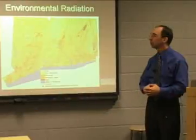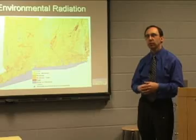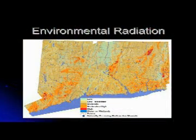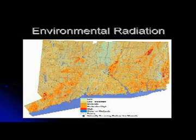We're going to look at environmental radiation — where does the radiation around us come from. This is a map looking at the radon levels in different parts of Connecticut.